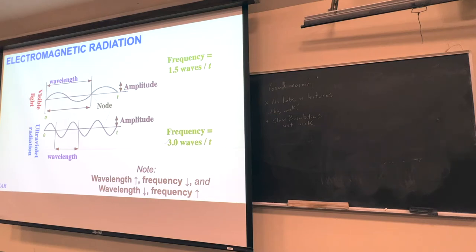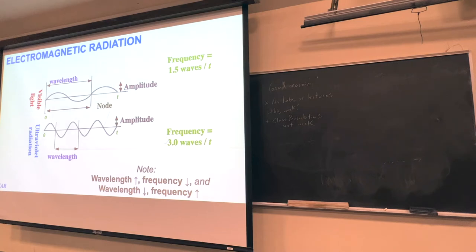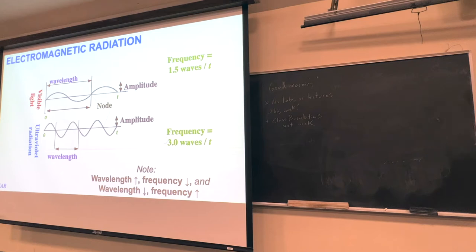As wavelength gets bigger, frequency gets smaller. If you have a shorter wavelength, you have a bigger frequency. So wavelength is literally a distance — centimeters, meters, micrometers, angstroms — and frequency is the number of waves per unit time, usually per second, but it can be anything. Any questions?